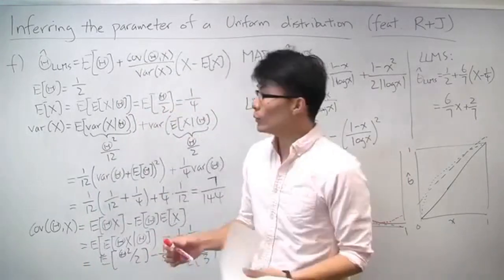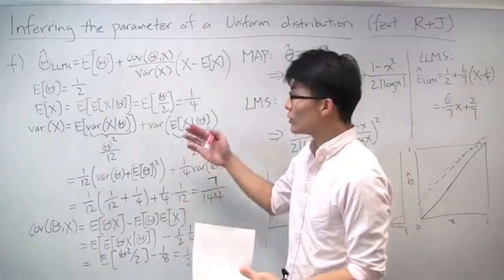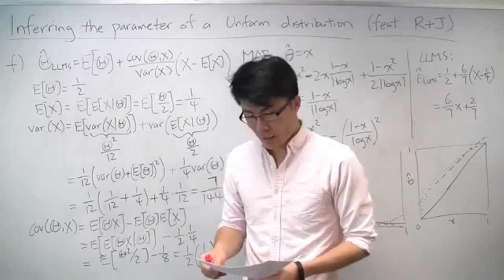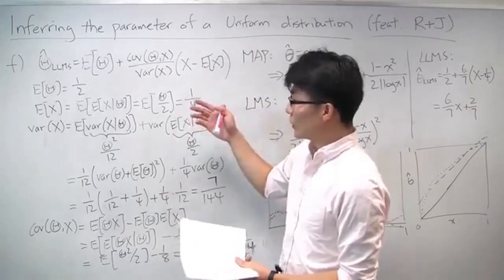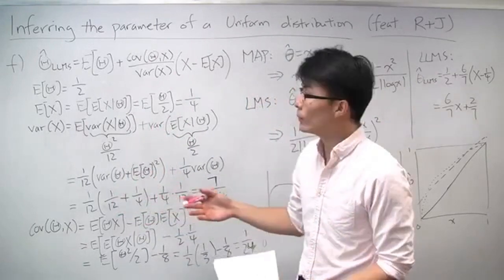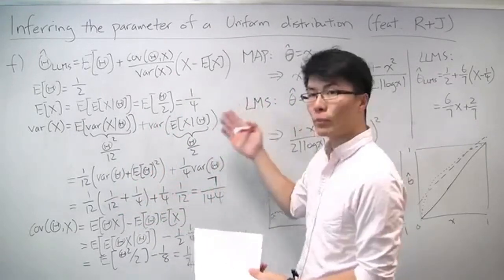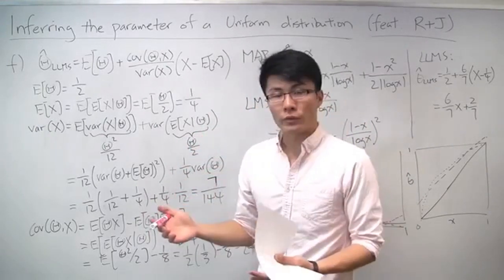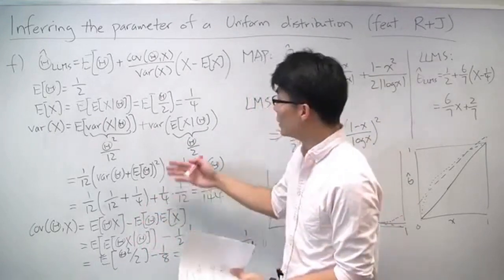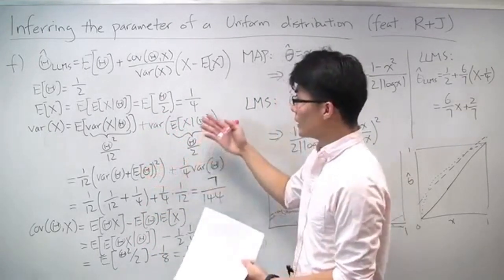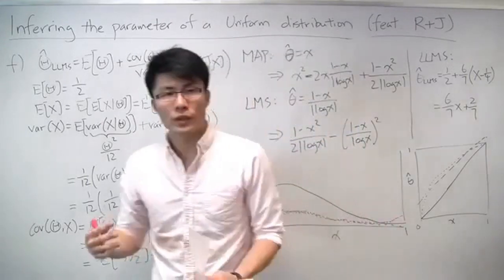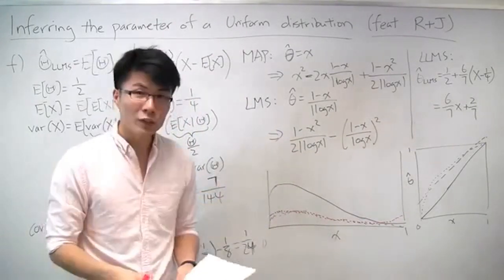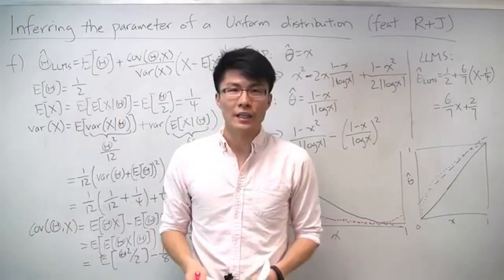In this problem, which has several parts, we went through basically all the different concepts and tools within Chapter 8 for Bayesian inference. We talked about the prior, the posterior, calculating the posterior using Bayes' rule, the MAP estimator, the LMS estimator, their mean squared errors and comparison, and finally the linear LMS estimator along with its mean squared error compared to all three. I hope that was a good review problem for Chapter 8, and we'll see you next time.